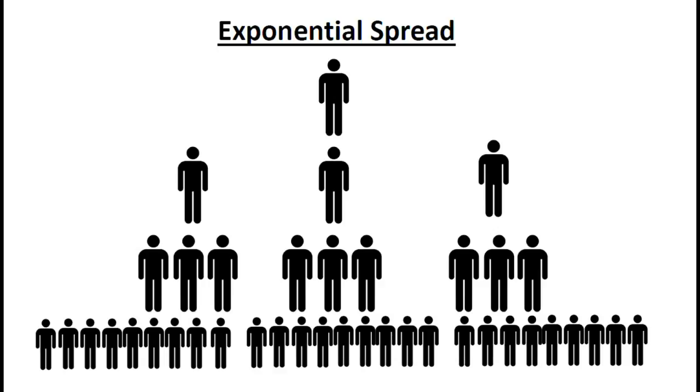If you look at this graph behind me, you can see very quickly the red bubbles show us exactly how much exponential spread has happened. China, which was the epicenter of the virus, is the biggest red bubble there. And now we've got red bubbles all over the world, particularly here in the United States.